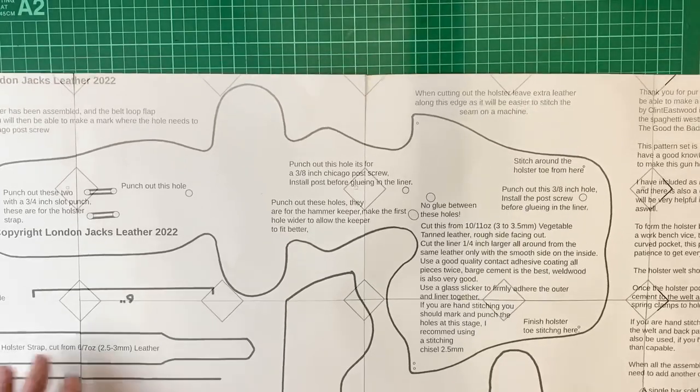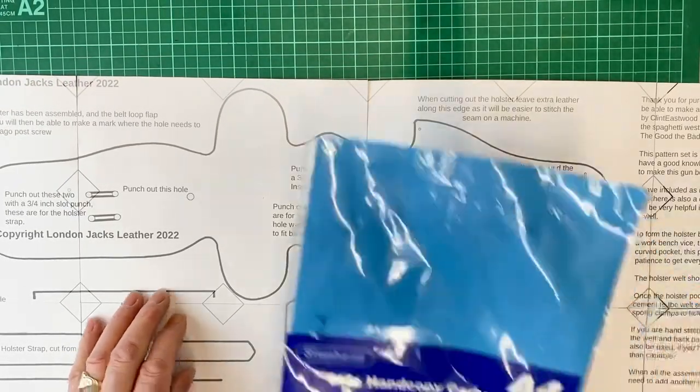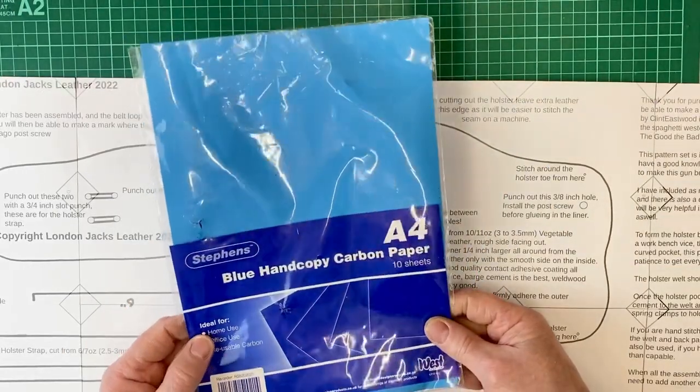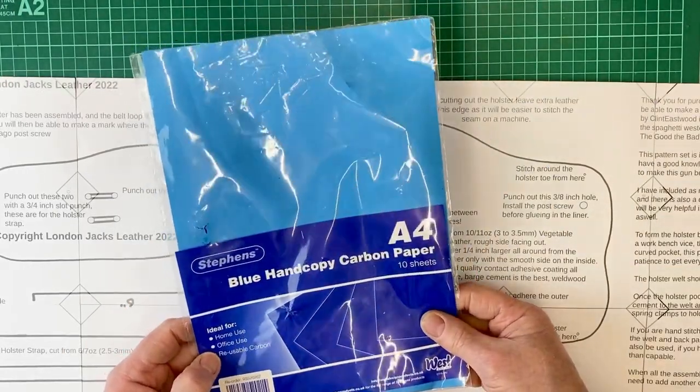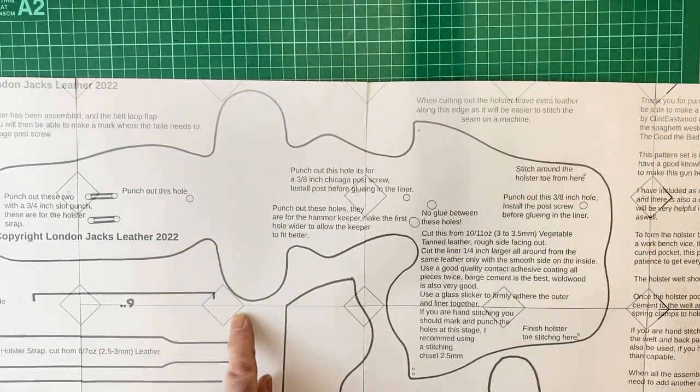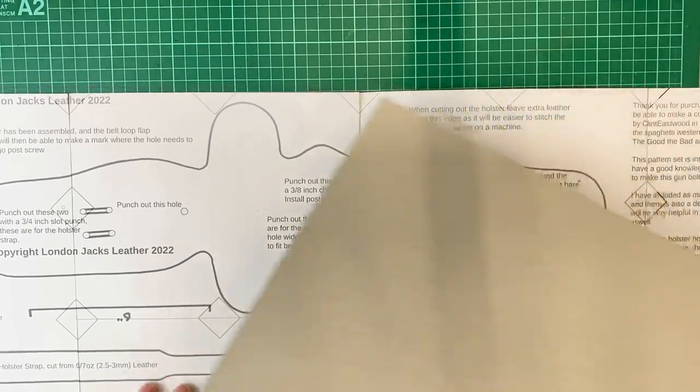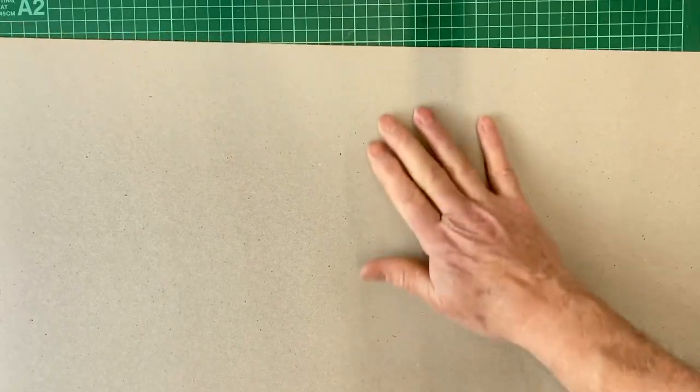Then what I recommend you do is get some carbon paper from a stationers. That will make it nice and easy to transfer this pattern onto some nice stiff cardboard. You can use poster board that you can get at Dollar General or somewhere like that. I like to use this quite thick card I buy on Amazon. It's great for making patterns.